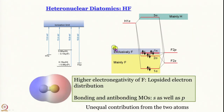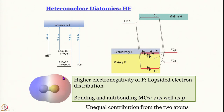Since there is more contribution from the fluorine orbitals, if you draw the electron distribution or constant probability surface, you get a lopsided distribution — in fact more lopsided than what appears in the cartoon. Unequal contribution from the two atoms is nicely accounted for in heteronuclear diatomic molecules by molecular orbital theory. What you need to remember is that orbitals must have comparable energy and compatible symmetry so that they can participate in a linear combination to form molecular orbitals.